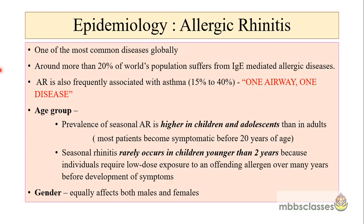If we see the epidemiology of allergic rhinitis, it is one of the most common diseases globally and it is estimated that more than 20% of the world population suffers from IgE-mediated allergic diseases. It is seen that allergic rhinitis is found to be associated frequently with asthma, and around 40 to 50% of the patients have both allergic rhinitis and asthma together. The reason is that the pathophysiology of both these diseases is similar and that is why it is called one airway, one disease.